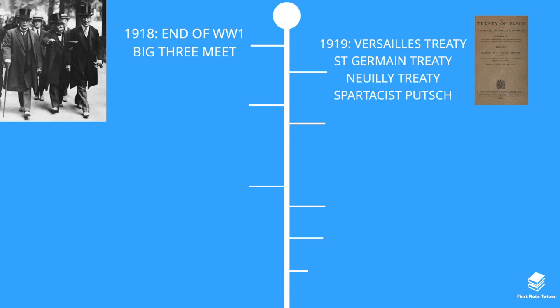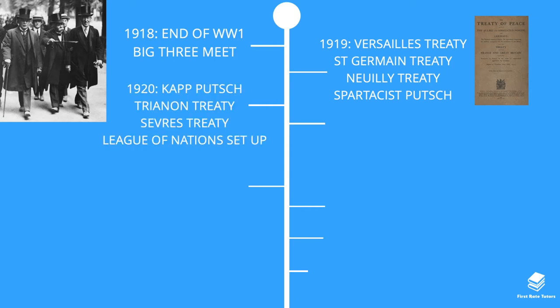The Neuilly Treaty impacted Bulgaria, which lost land, while Yugoslavia gained land, and Romania and Greece were also formed. In Germany there was the Spartacist putsch by left-wing communists. In 1920 the new German government faced further challenges with a right-wing Kapp putsch, led by Wolfgang Kapp who wanted to overthrow the SPD government. However, both putches were unsuccessful and the SPD managed to survive. There were also further peace treaties signed.